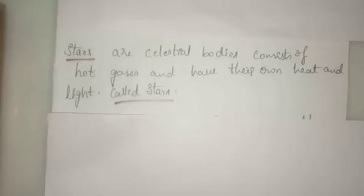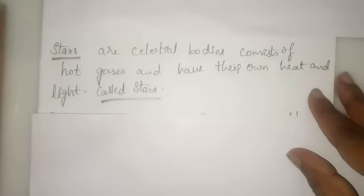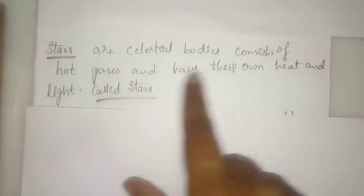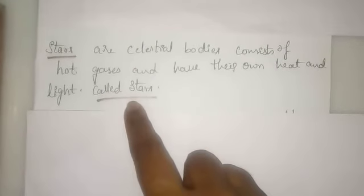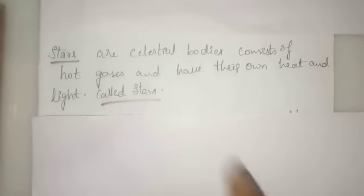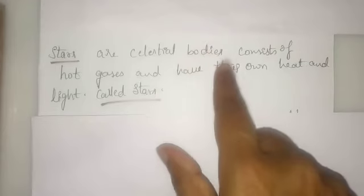Stars are celestial bodies consisting of hot gases and have their own heat and light. These stars are present in the space, in the universe — not on the earth — that's why they are called celestial bodies.